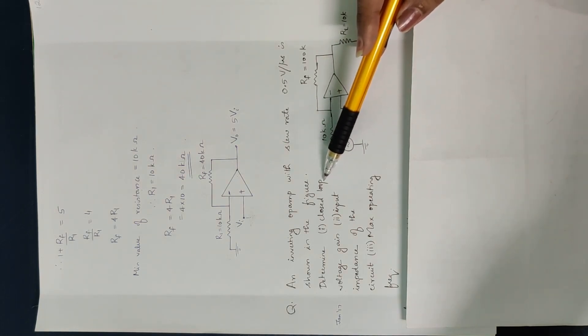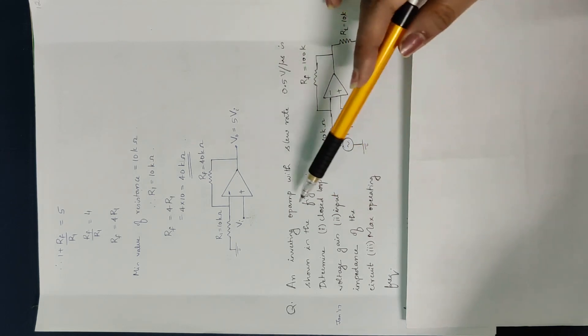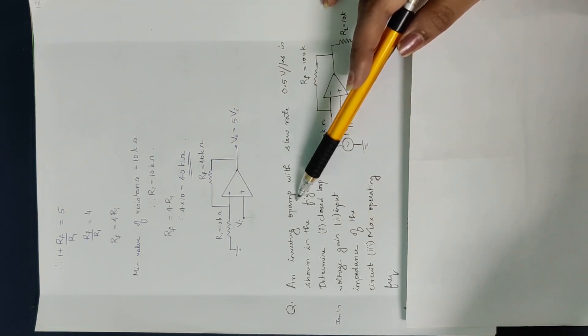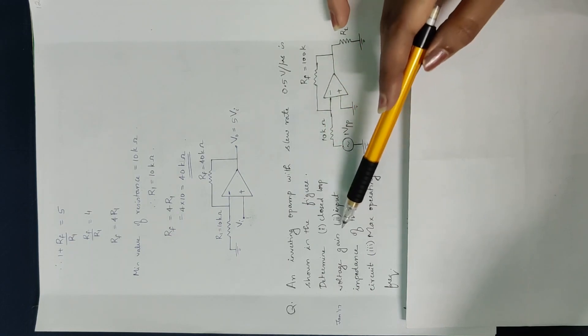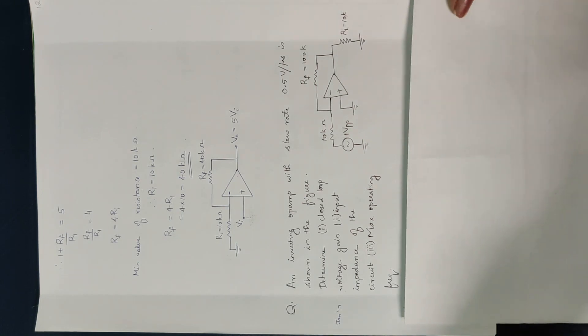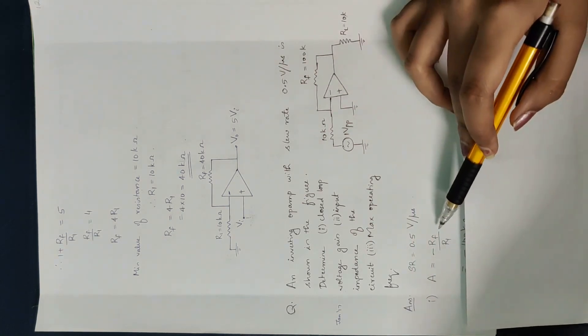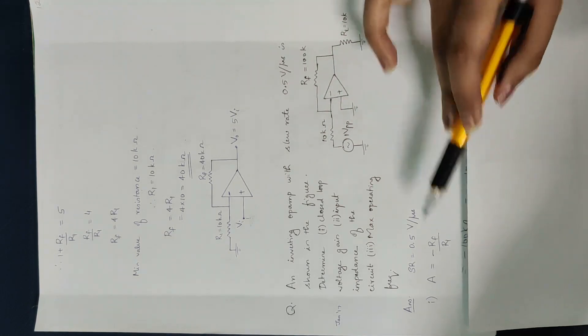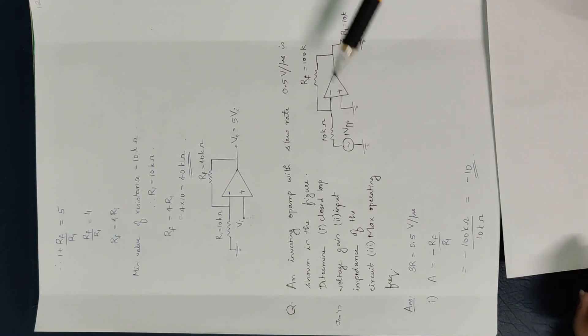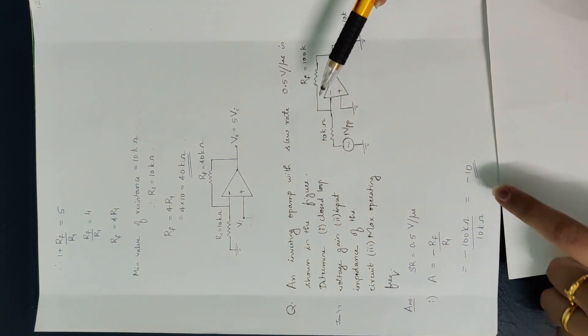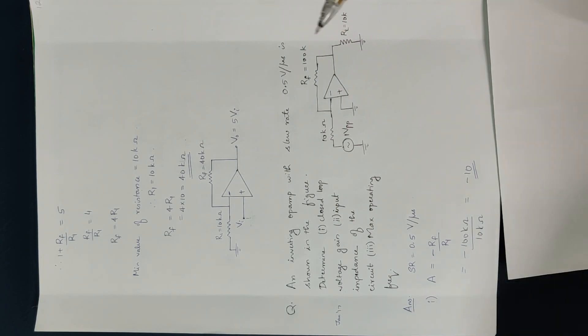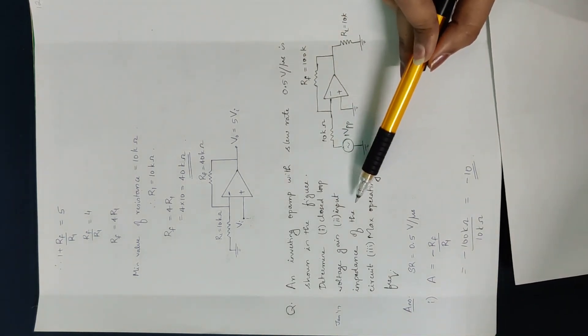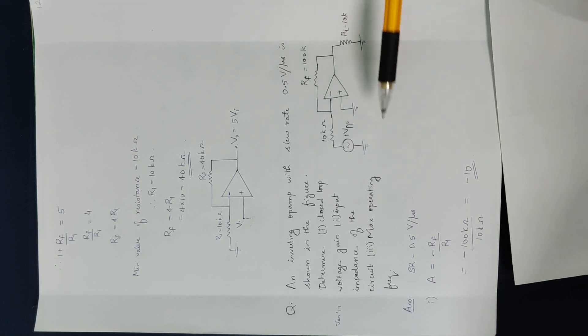For the first part, we find the closed-loop voltage gain. For an inverting op-amp amplifier, the closed-loop voltage gain is equal to minus Rf divided by R1. Substituting the values: minus 100 kΩ divided by 10 kΩ gives a gain of minus 10.